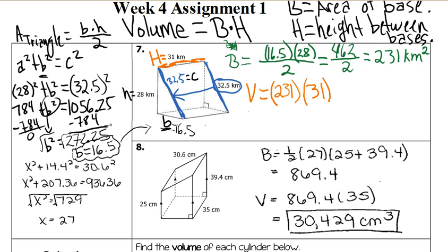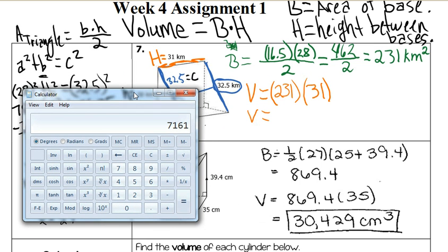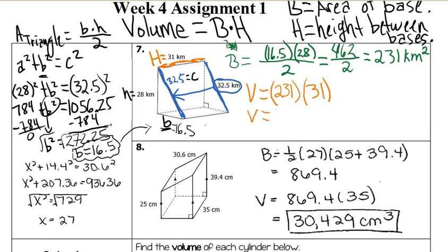Now my final answer here is going to be 231 times 31. So 231 times 31, which is 7161. So my volume here is 7161. And it's going to be units cubed, so kilometers cubed with the 3 on top, 3 as an exponent. That is how you find number 7.